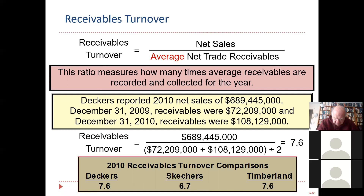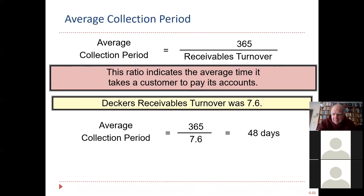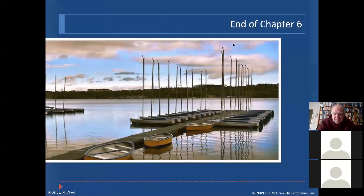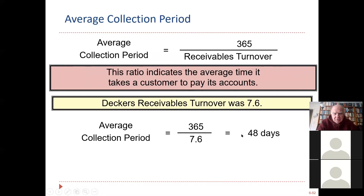If you go into a meeting and say your receivables turnover was 7.6, the boss will look at you like you're speaking a foreign language. So here's the next important step — we're going to turn it into days. There are 365 days in a year. Divide by the turnover of 7.6 and you get 48 days. This company collects cash in 48 days from the time they record the sale to the time they receive cash. That's something everybody understands.